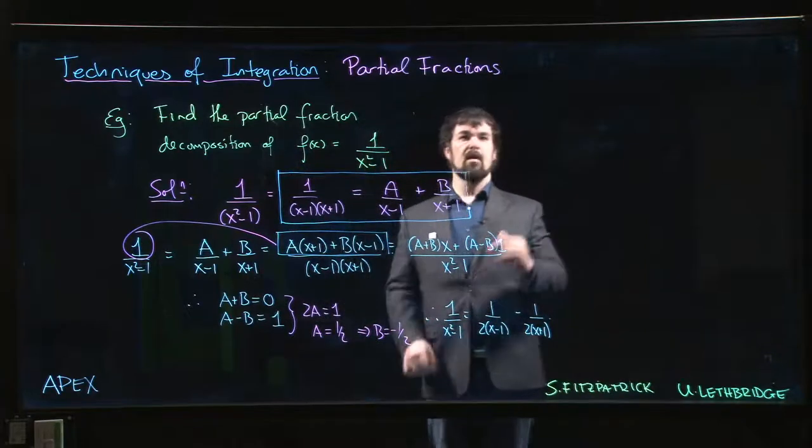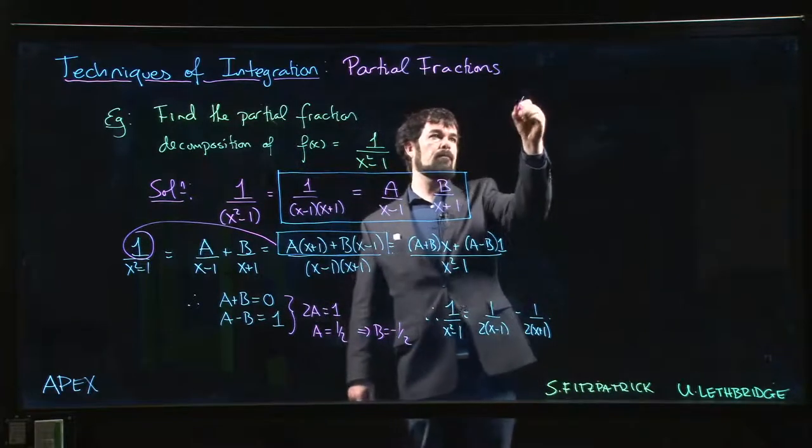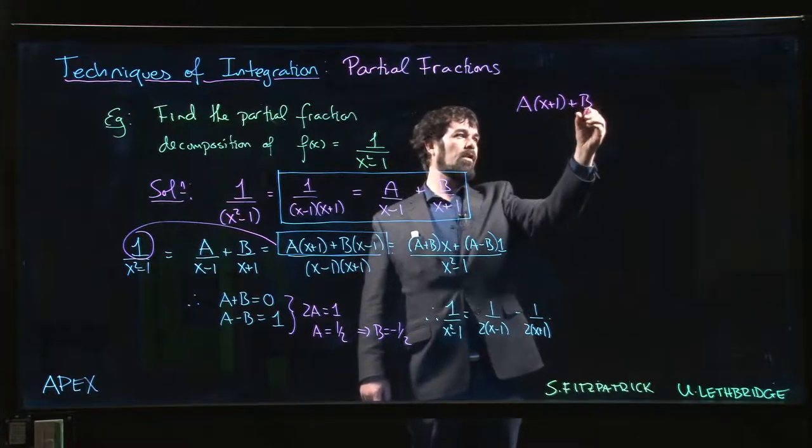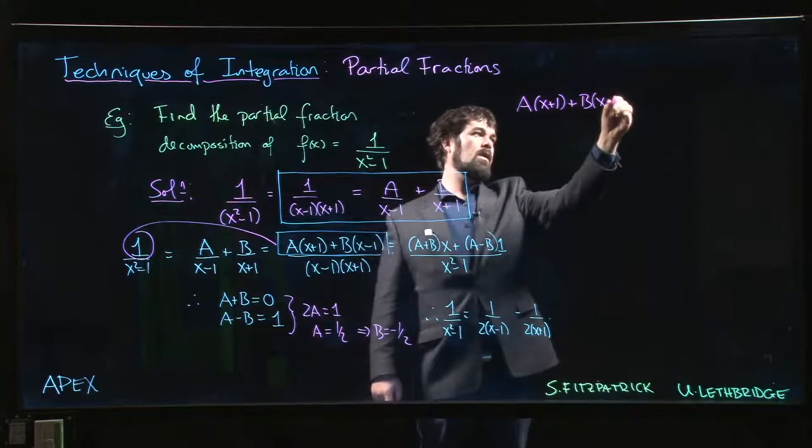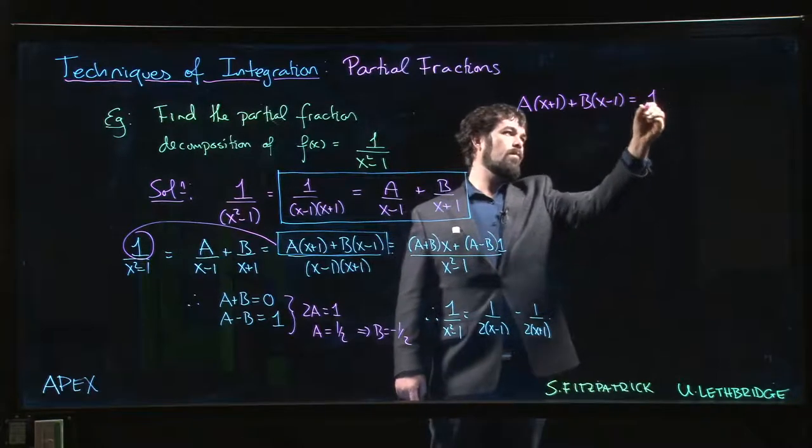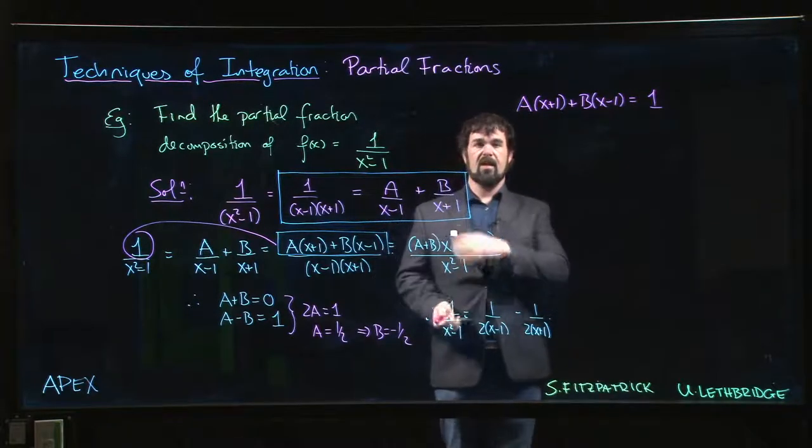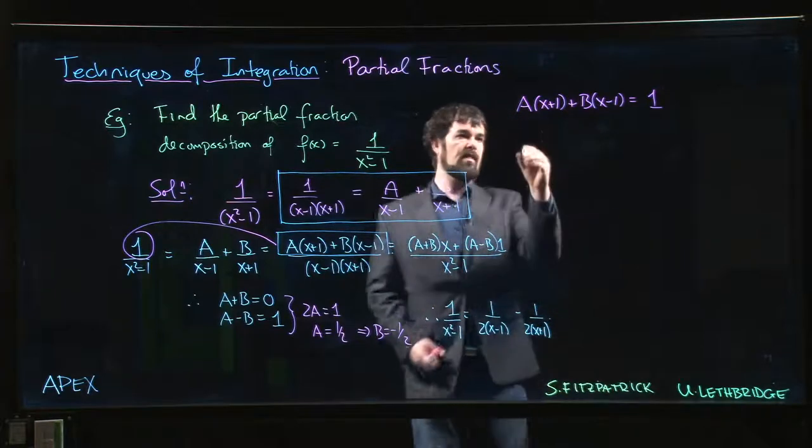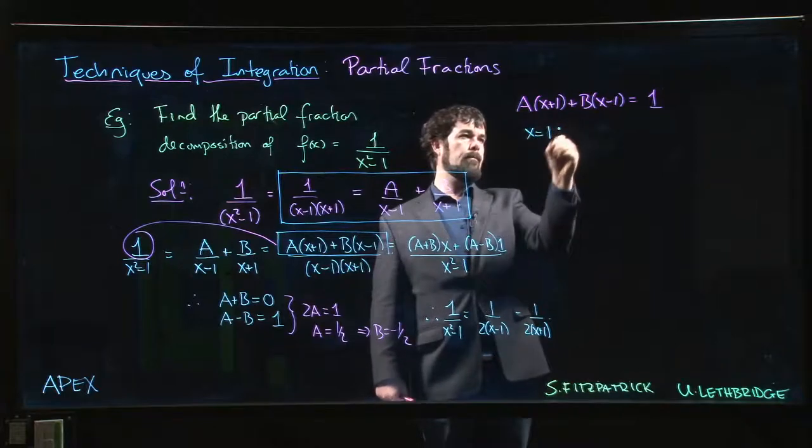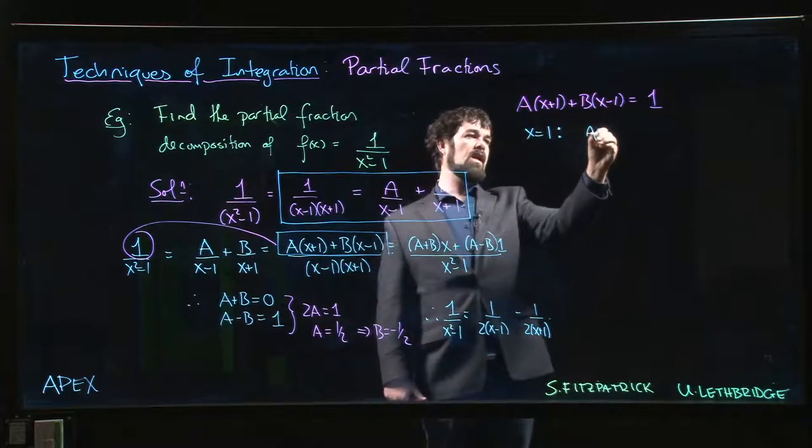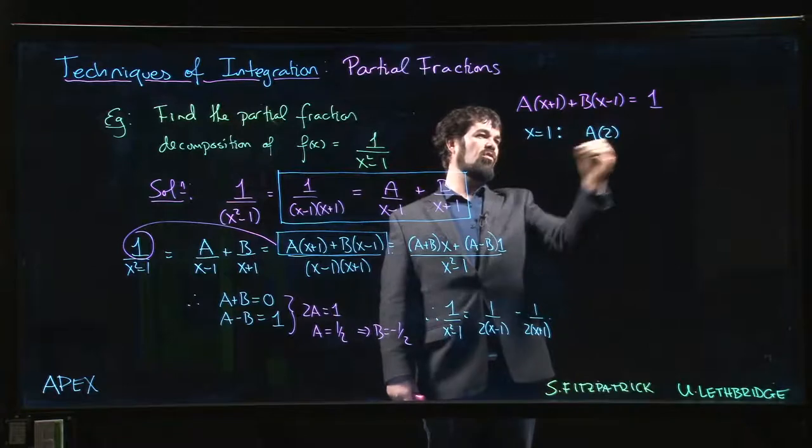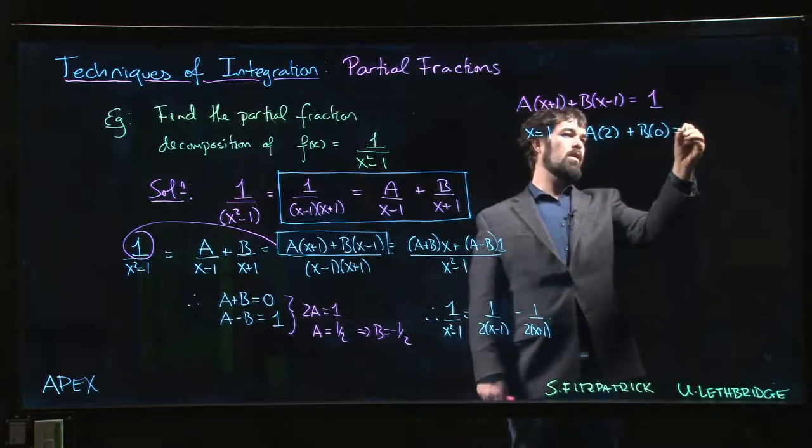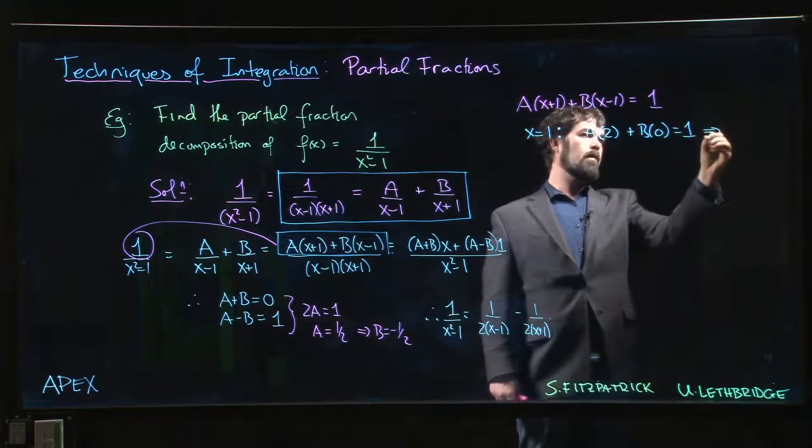But instead, what we can do is say that A times (x+1) plus B times (x-1) has to equal 1. If we accept that this is an identity that needs to hold for all values of x, then we can say that if x equals 1, that gives me A times 2 plus B times 0 equals 1, and that means A has to be 1/2.